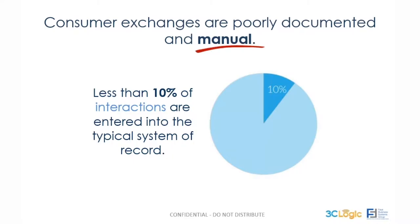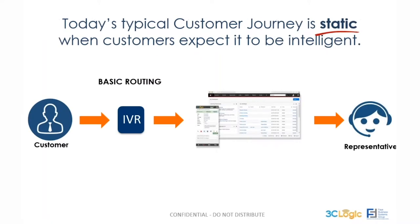That means 90% of the time, information simply doesn't exist or isn't available for an agent or fellow employee to rely upon when needed — most likely when an interaction is taking place between the organization and the consumer. The challenge is: how can you automate the collection of data so that your CRM is as accurate as possible and you can leverage that information in a useful fashion when the time comes?